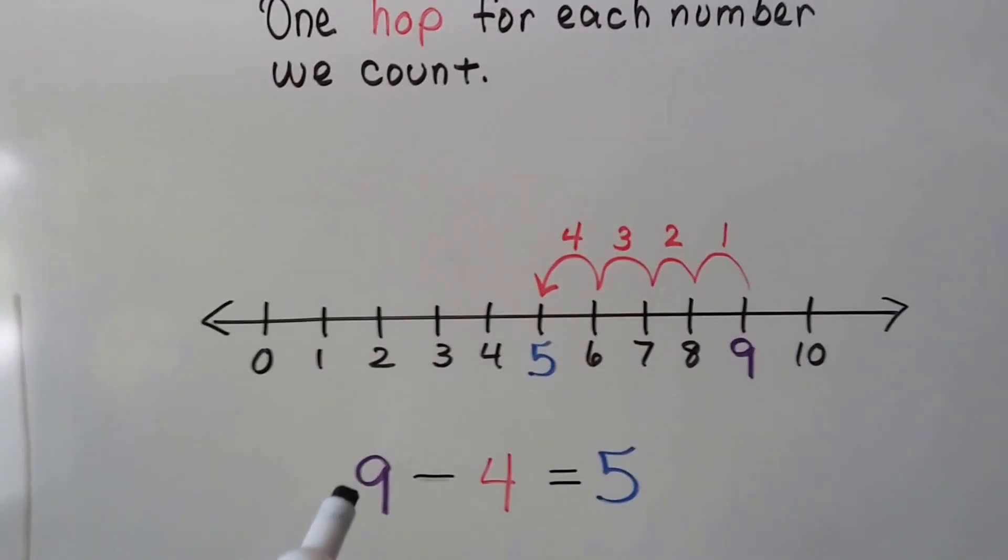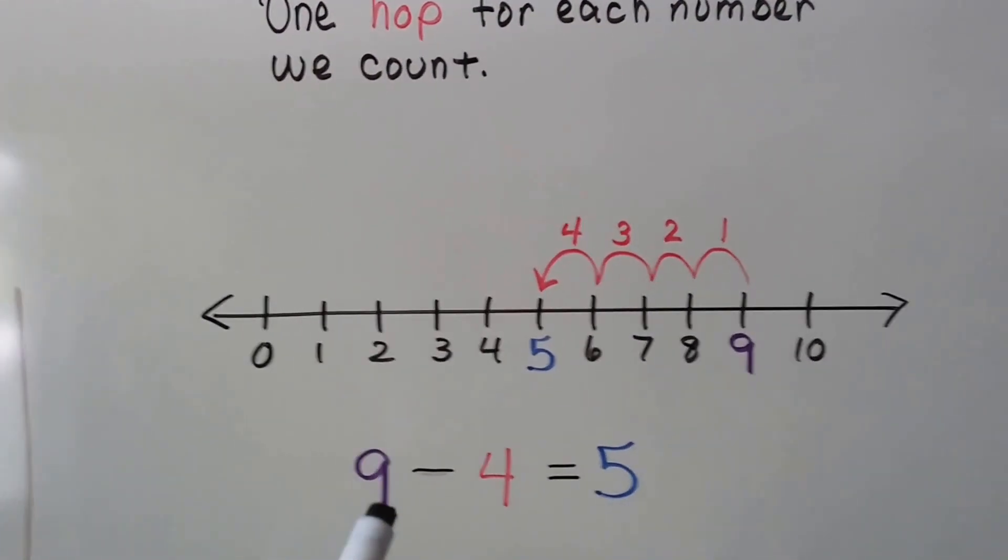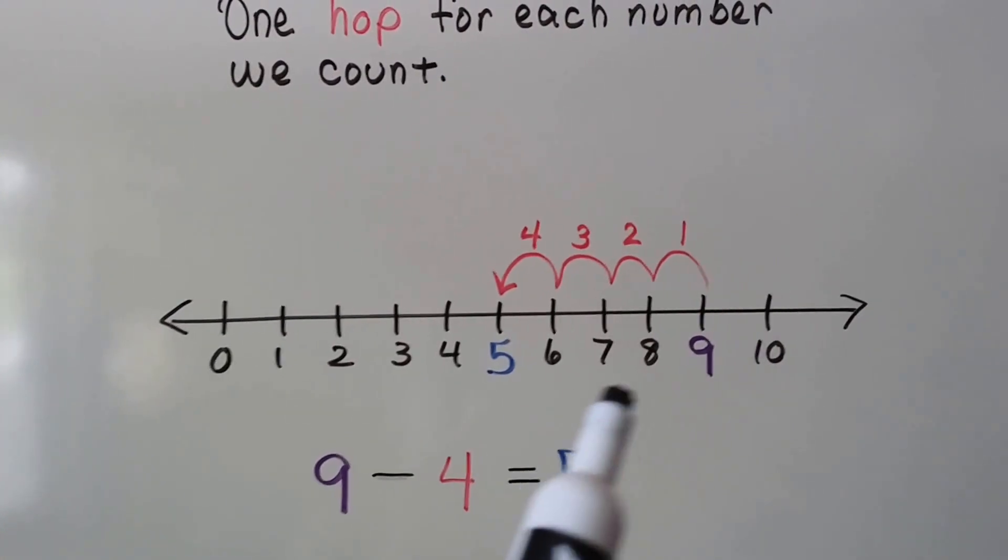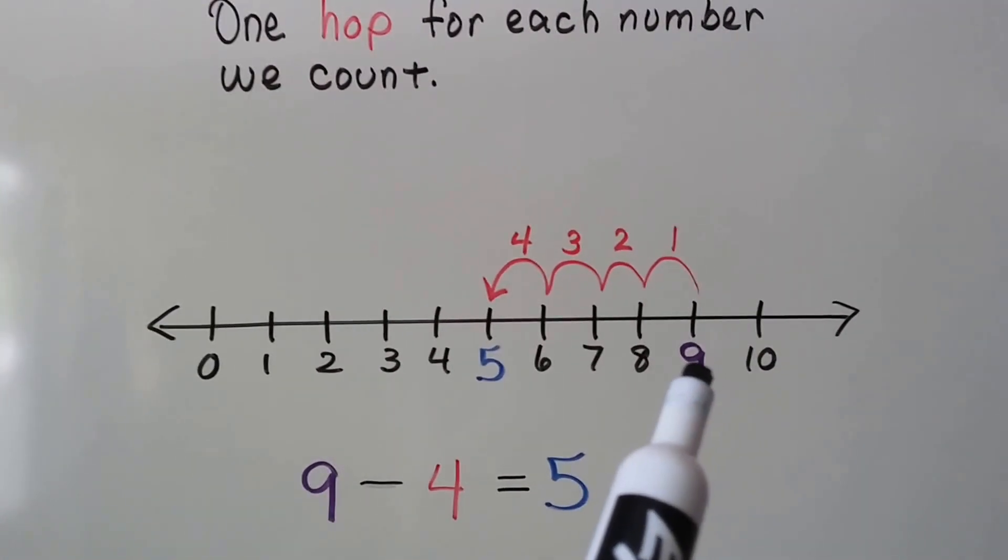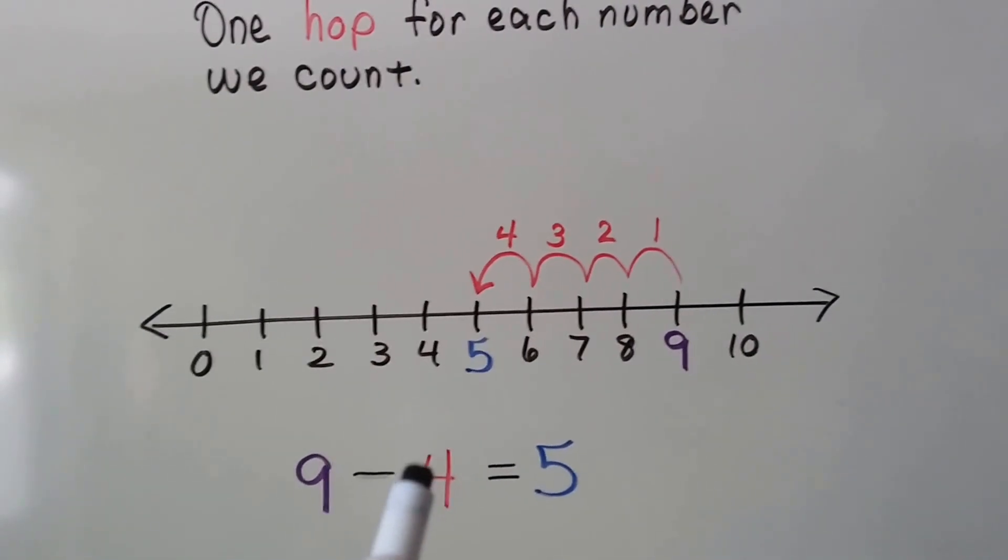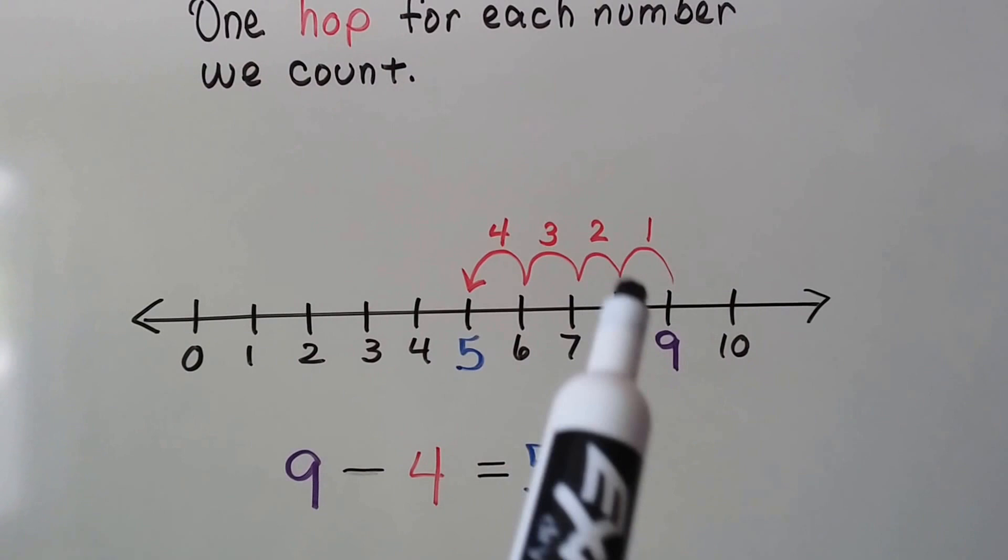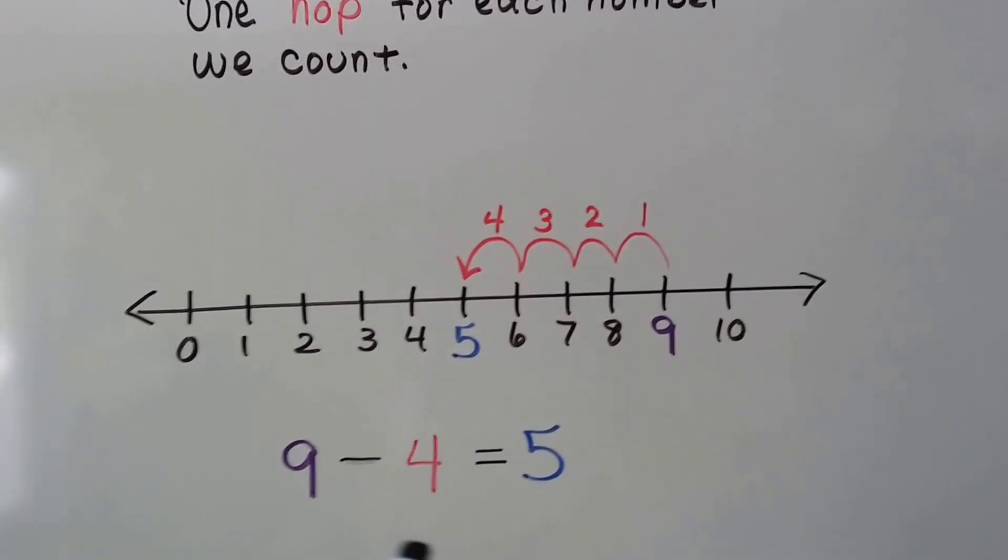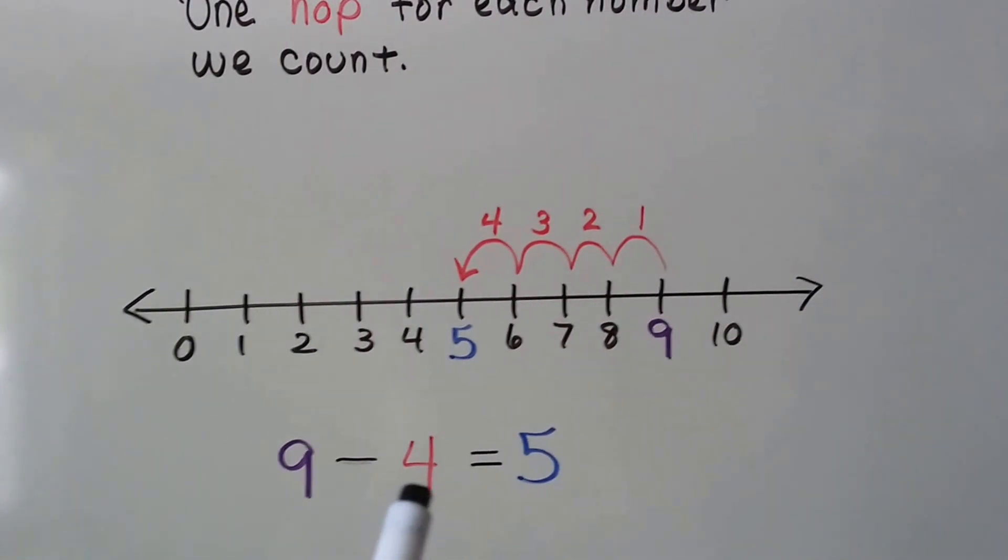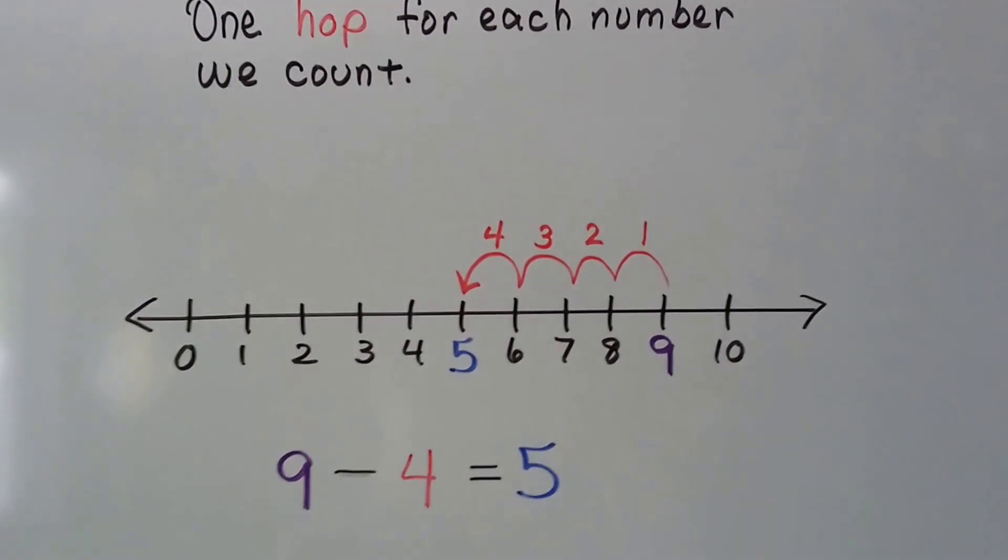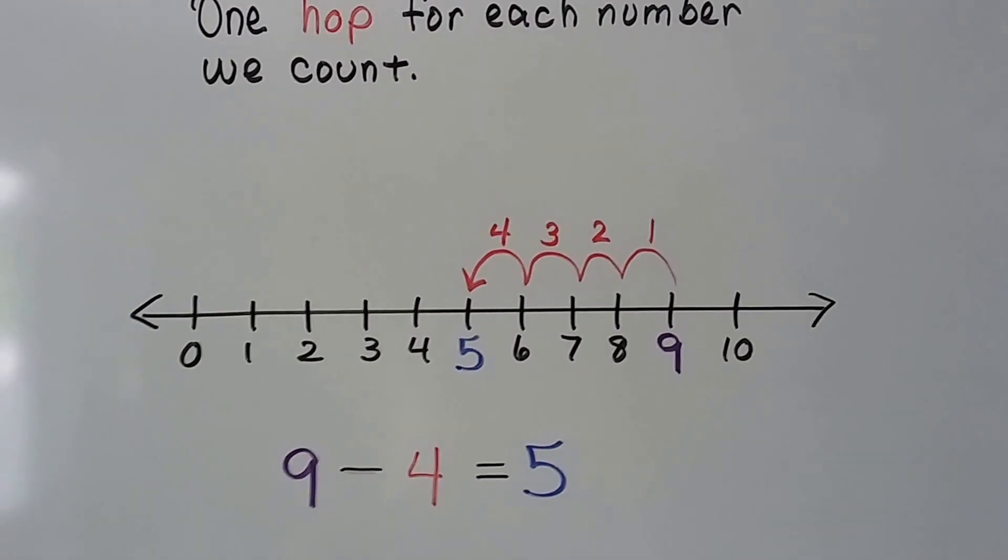So we have 9, that's our minuend, and we're going to take away 4, that's our subtrahend. We start at the 9 on the number line and we do one hop for each number we count. We're going to count four hops. One, two, three, four, that lands us on the 5, so we know 9 minus 4 equals 5. And our difference is 5. 5 is the difference between a 9 and a 4.